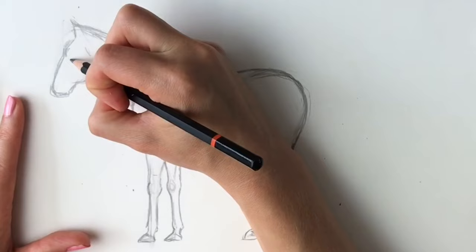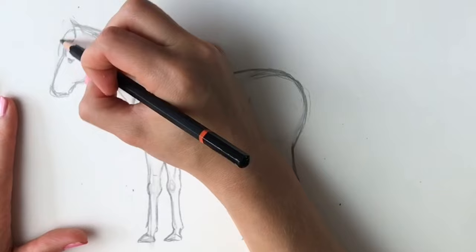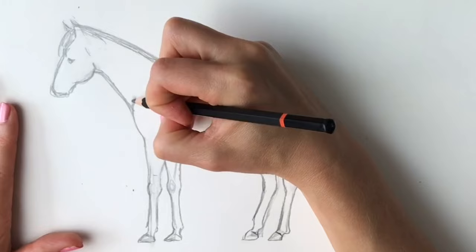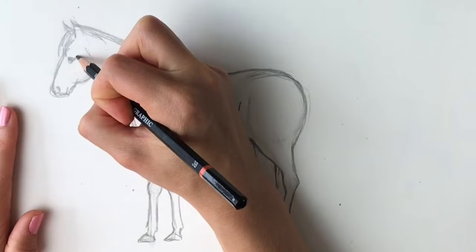Bring it round. Now the eye will come round about here. Just pencil it in. Do the forelock and the other ear, and add the nostril and the mouth. And don't forget to add the tail.